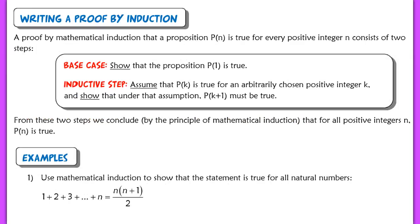Now that you have the general concept, let's look at the formal setup for writing a proof by induction. A mathematical proof by induction for any proposition P of n — any conjecture we make — if you want to show that it's true for every positive integer, or natural number, it consists of exactly two steps. First, you show the base case: you must state that P of 1 is true — that you can reach the first rung.